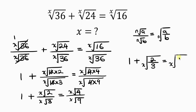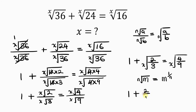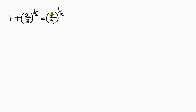Our next step is to apply the property of indices which says the n-th root of m is the same as m raised to the power of 1 over n. Applying this to our expression, we get 1 plus (2/3) raised to the 1 over x, equal to (4/9) raised to the 1 over x.